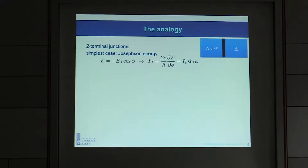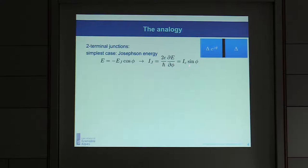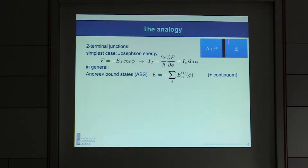The analogy we use to describe these materials is actually quite simple. If you think about the usual Josephson junction, you have two superconductors coupled by something in the middle — in the simplest case an insulating barrier. Each superconductor has a gap and a phase, and if you couple them, you have an energy of the system that depends on the phase difference. This energy leads to a current in the junction; the energy depends on cosine of the phase difference, giving the usual sinusoidal Josephson relation.